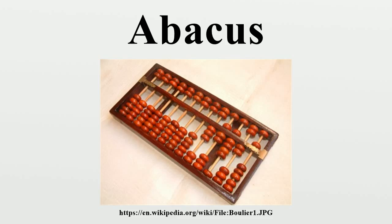Writing in the 1st century BC, Horace refers to the wax abacus, a board covered with a thin layer of black wax on which columns and figures were inscribed using a stylus. One example of archaeological evidence of the Roman abacus dates to the 1st century AD. It has eight long grooves containing up to five beads in each and eight shorter grooves having either one or no beads in each. The groove marked I indicates units, X tens, and so on up to millions. The beads in the shorter grooves denote fives — five units, five tens, etc. Essentially in a bi-quinary coded decimal system, obviously related to the Roman numerals. The short grooves on the right may have been used for marking Roman ounces.